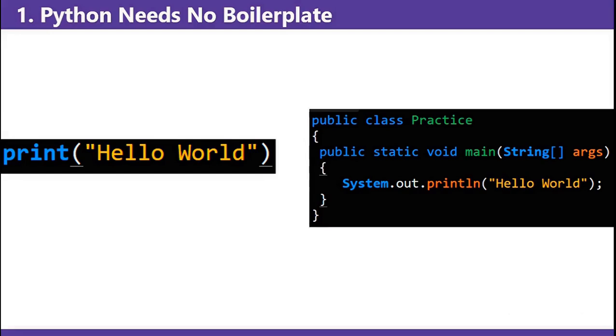Print hello world, or public class Practice public static void main String array args System.out.println hello world semicolon.